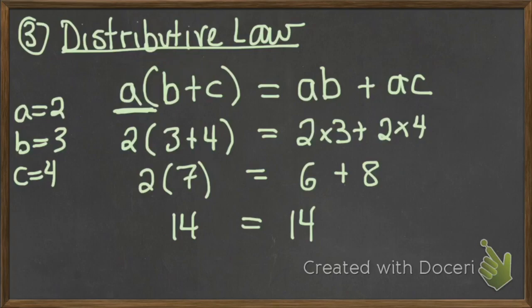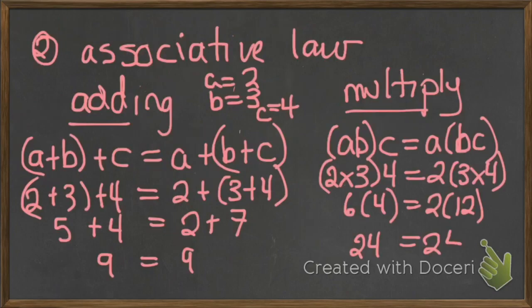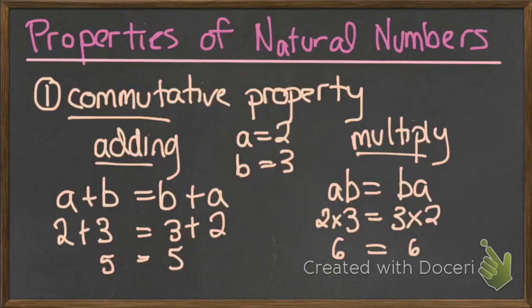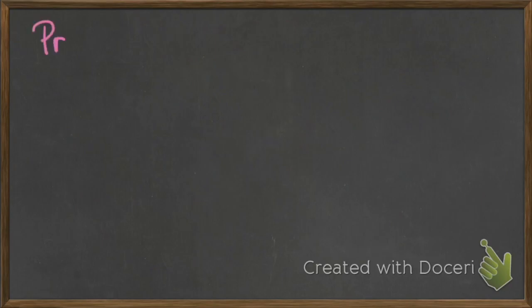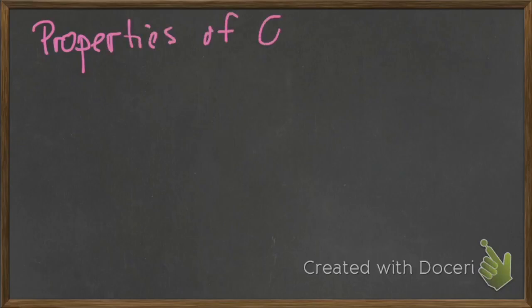So those are our three laws: distributive, associative, and commutative. Now that we know our laws, we are going to talk specifically about the properties of 0 and 1.